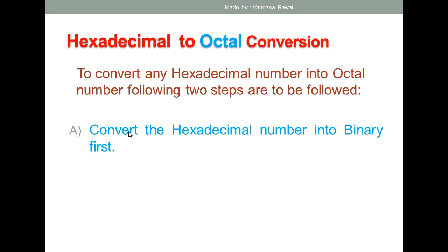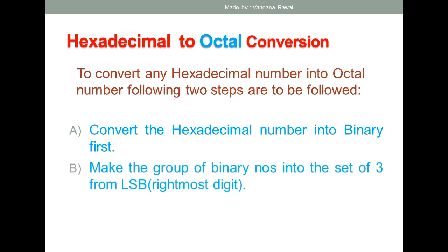There are basically three steps to convert any hexadecimal number into octal. The first step is to convert the hexadecimal number into binary, as explained in the hexadecimal-to-binary conversion lecture. The second step is to make groups of binary numbers into sets of three — meaning you take the binary result and group the digits into groups of three.